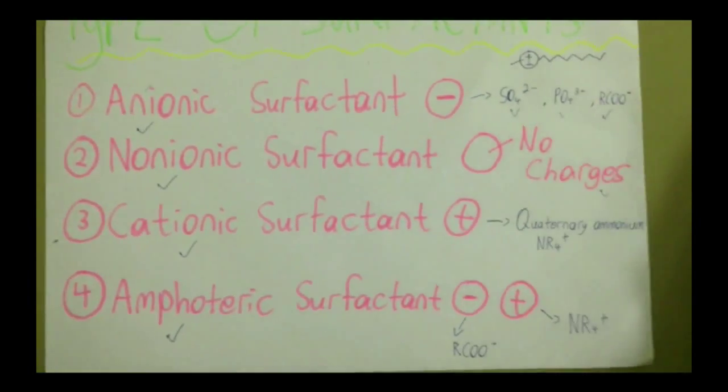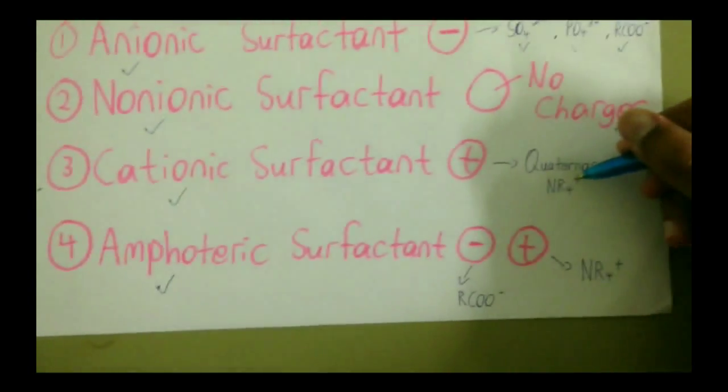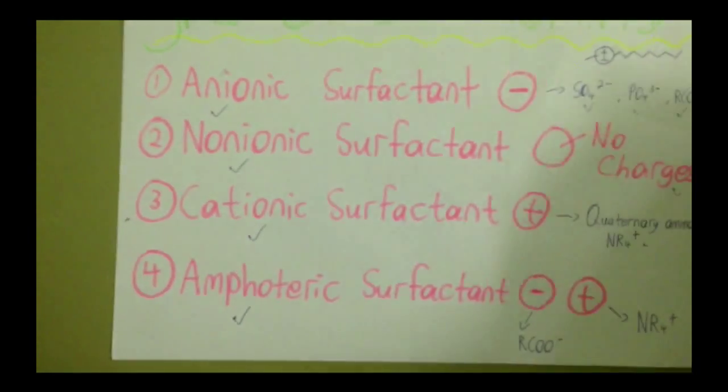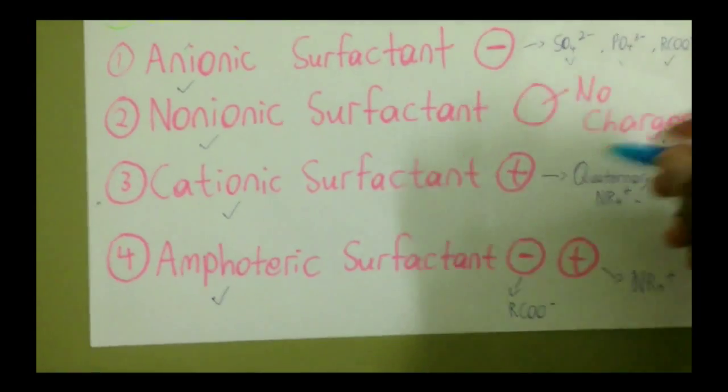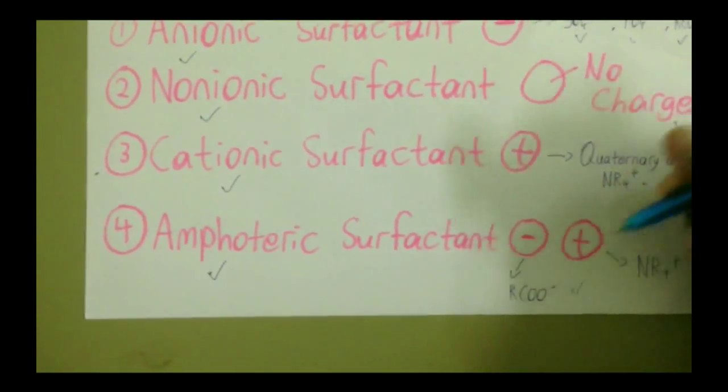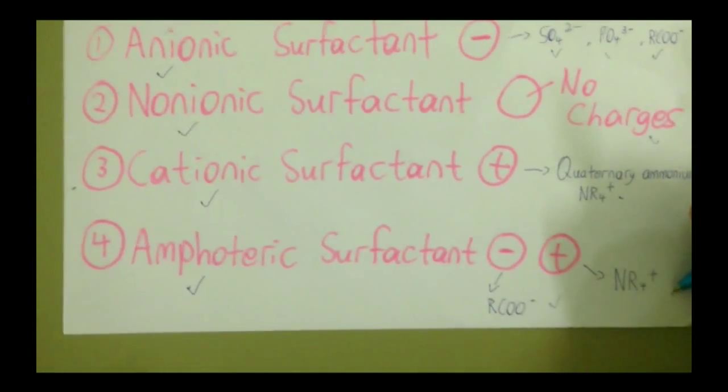Cationic surfactant is positively charged that consists of quaternary ammonium. Lastly, amphoteric surfactant is negatively and positively charged that consists of carboxylate ion which is negative and quaternary ammonium which is positive.